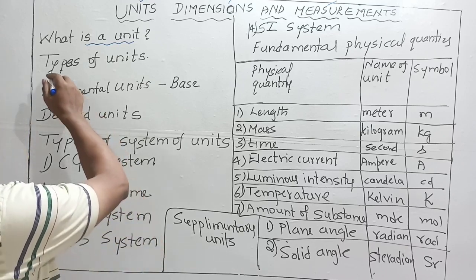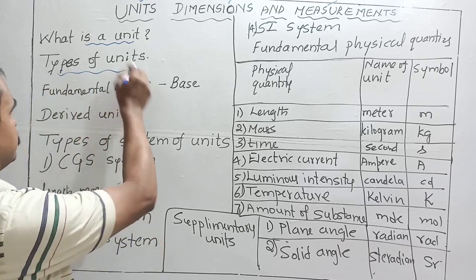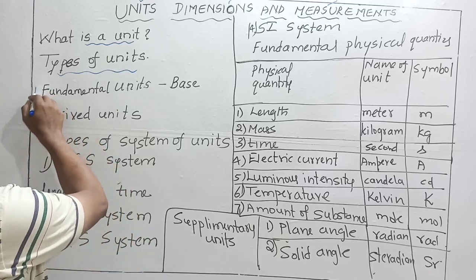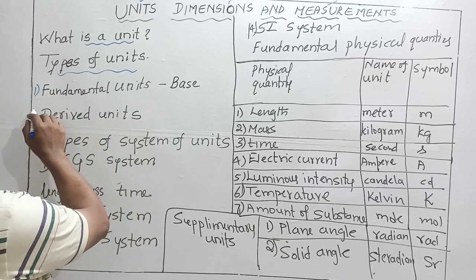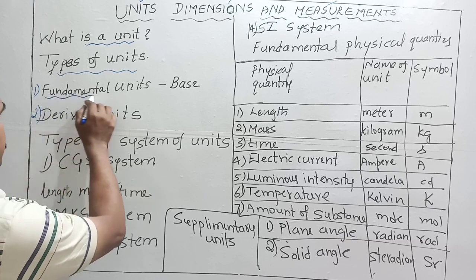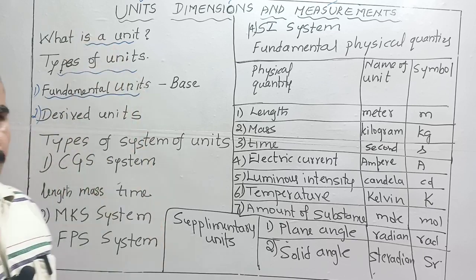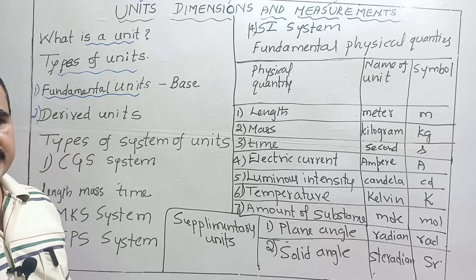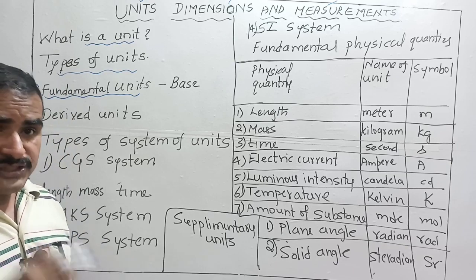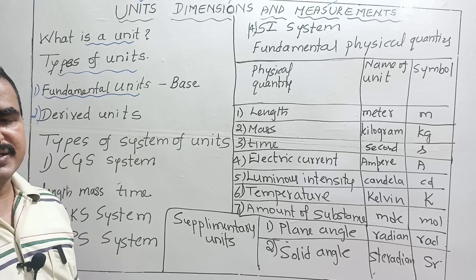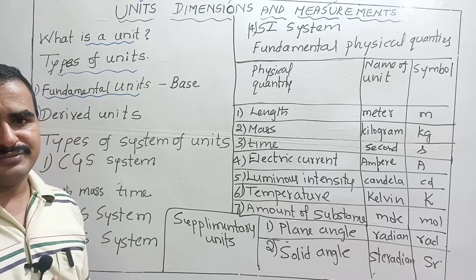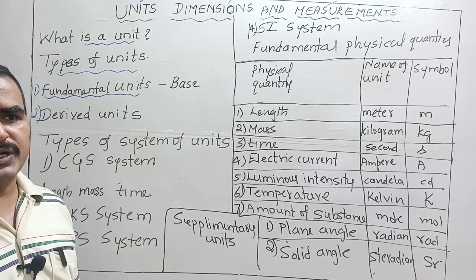What are the types of physical quantities? Basically there are two types: fundamental physical quantities and derived physical quantities. Physical quantities are measurable quantities — you can measure them using any one of the standard instruments.